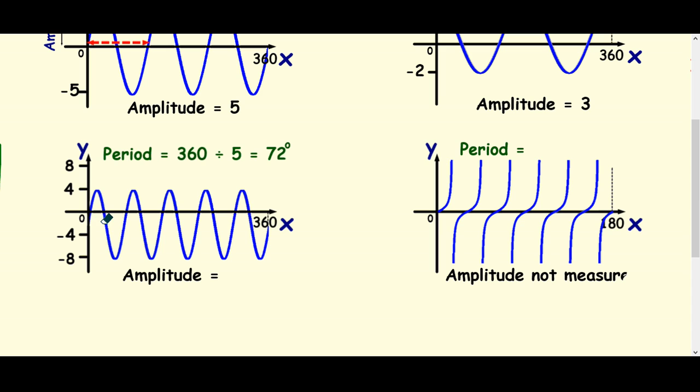One wave finishes at 72 degrees. To get the amplitude, look how high it goes. 4 and minus 8. The difference, which is 12, half it. And you'll get 6.